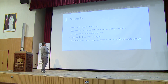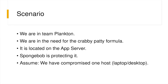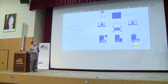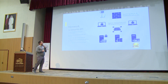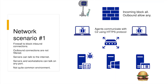I'll walk you through a scenario. We are Team Plankton — I'm a very big Spongebob fan. We are looking for the Krabby Patty formula. It's located on the application server; Spongebob is protecting it, and the only assumption is that we've compromised the host. Scenario one: the firewall is blocking all inbound connections, but everything outbound is allowed. We can use any protocol to send data outside to the C2 environment, and any protocol internally as there is no filtering between client and server network.